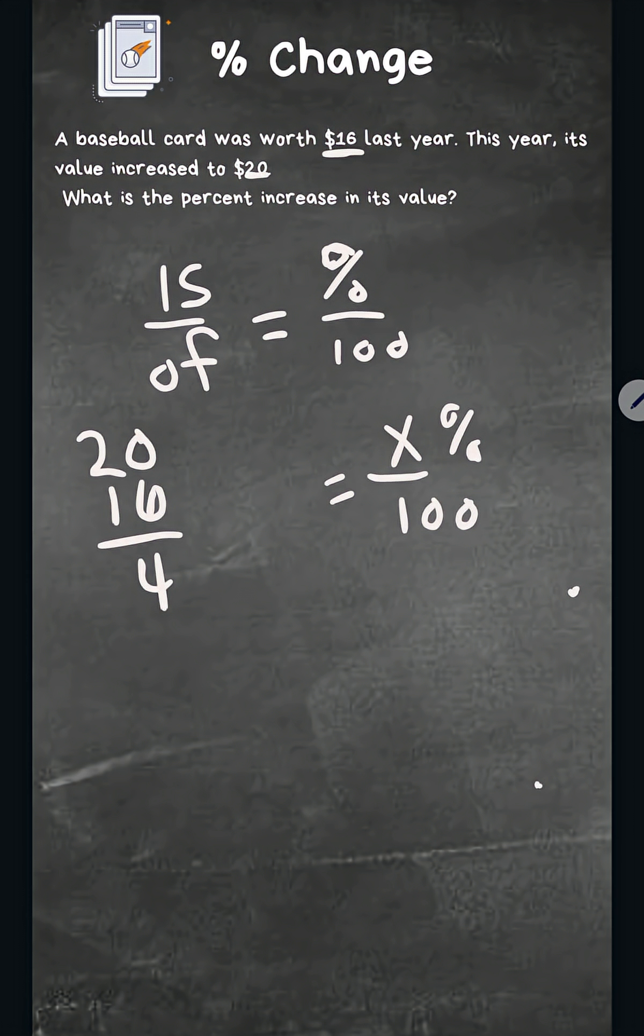Remember, it wants the percent increase in its value. So what percent is the increase? That means is is going to be four, and it's not the end value. We want to know what percent of the beginning value, which was 16. It grew four dollars, so we want to know what percent is that of 16. It's basically asking: four, which is the percent increase, is what percent of the original value, which is 16.